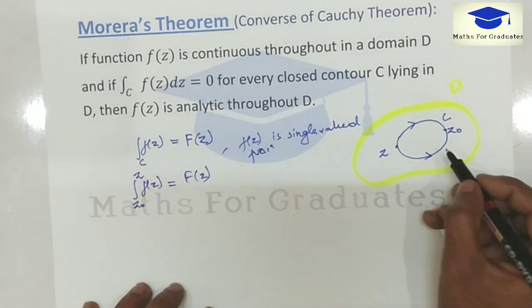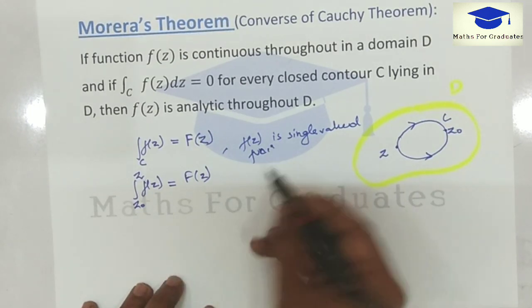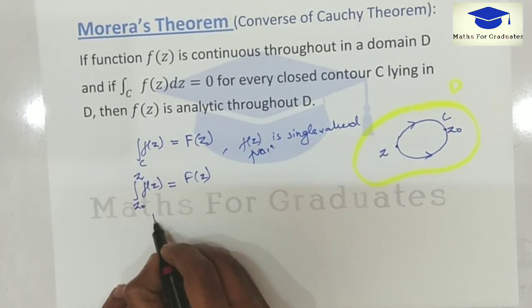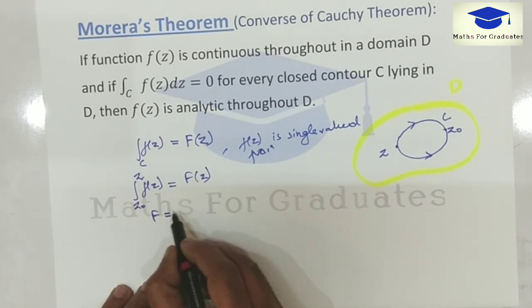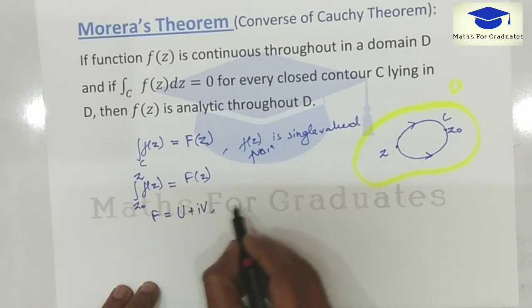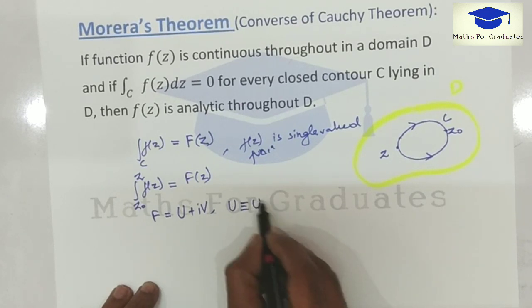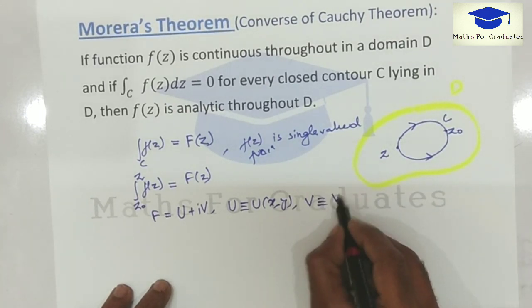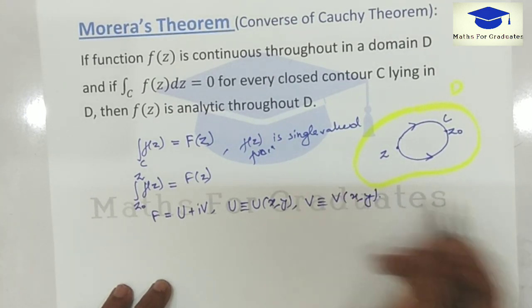If F(z) is a function given by capital U plus iV, where U is some function of x, y and V also some function of x and y.